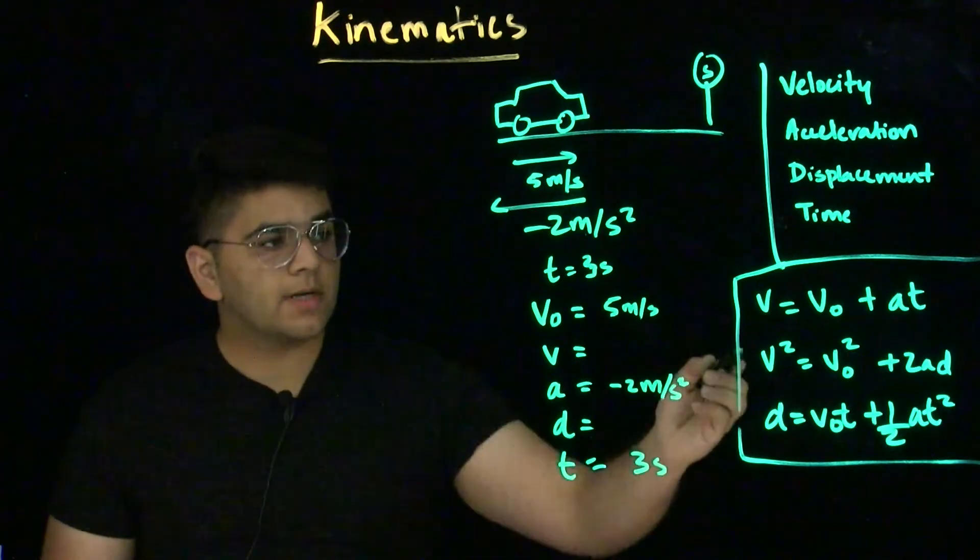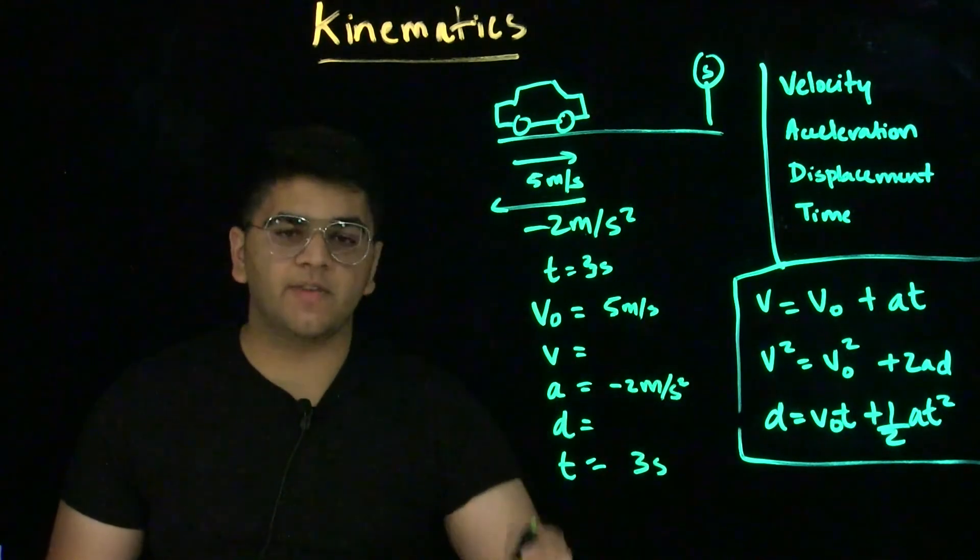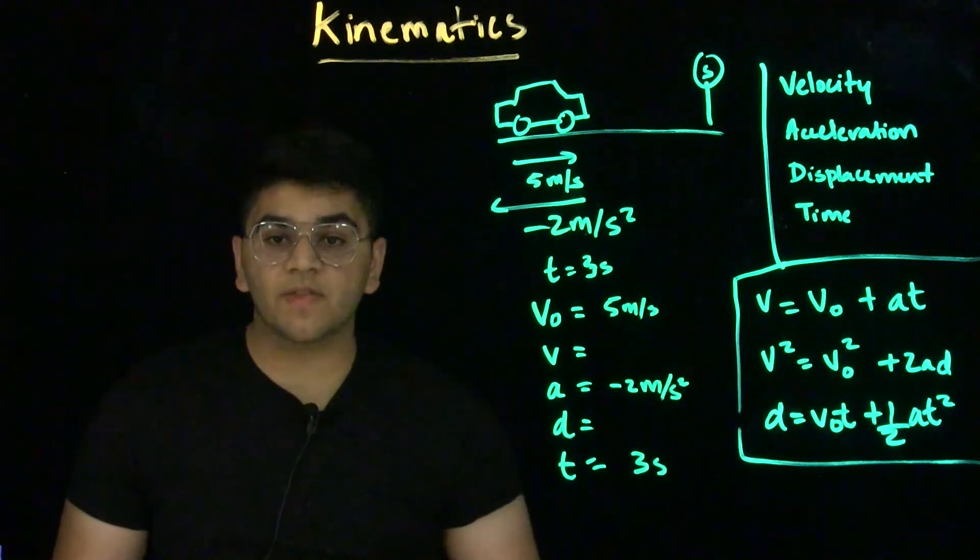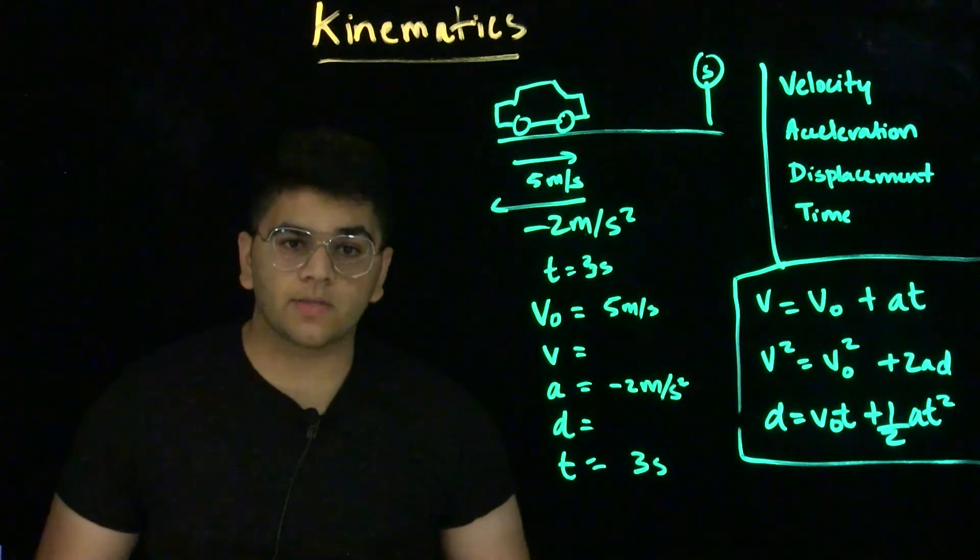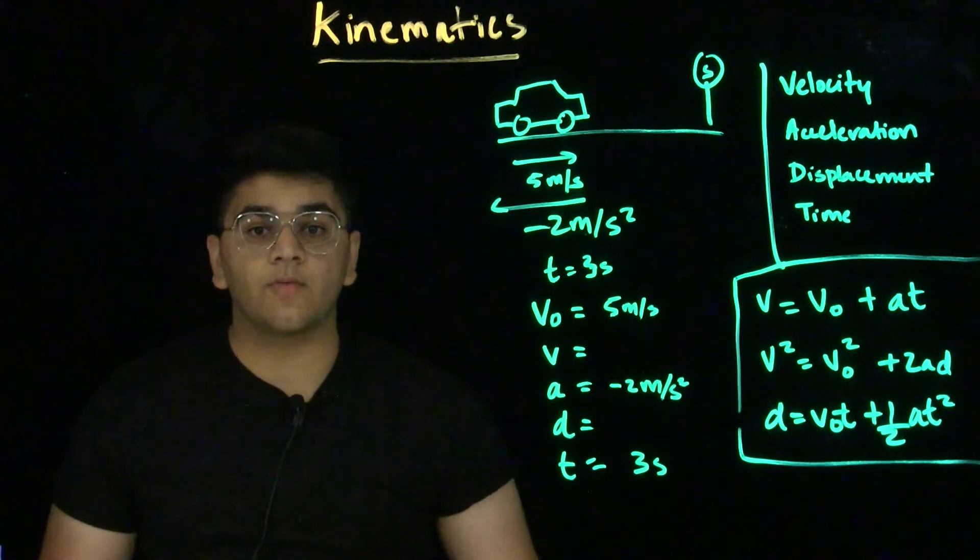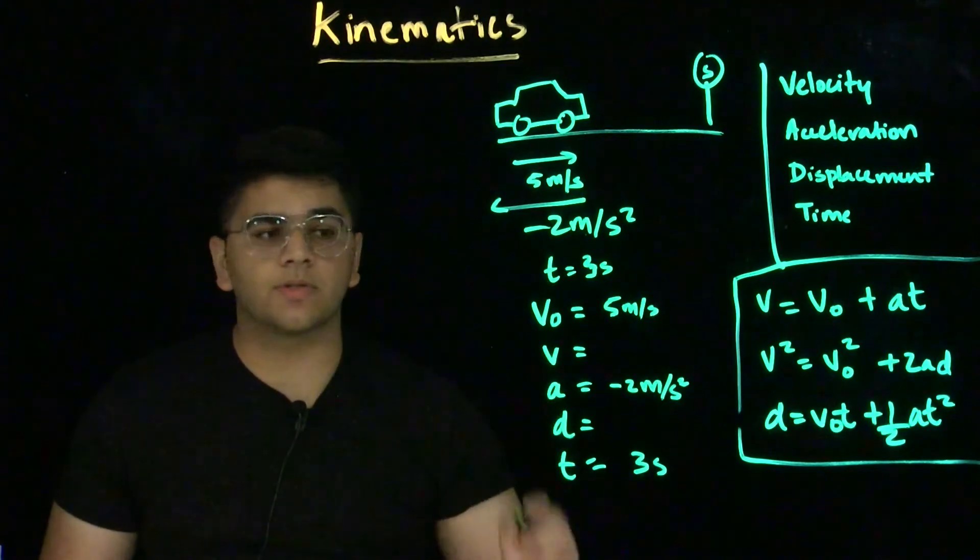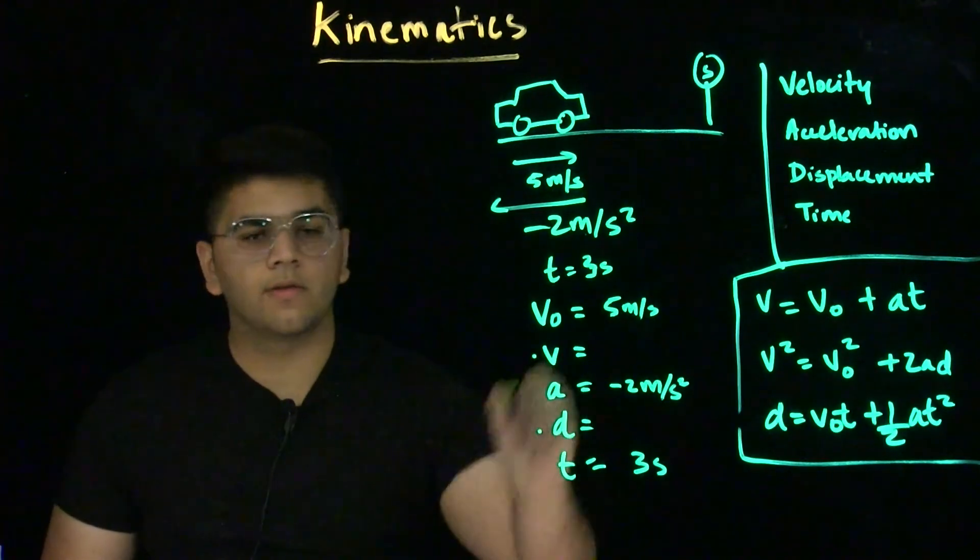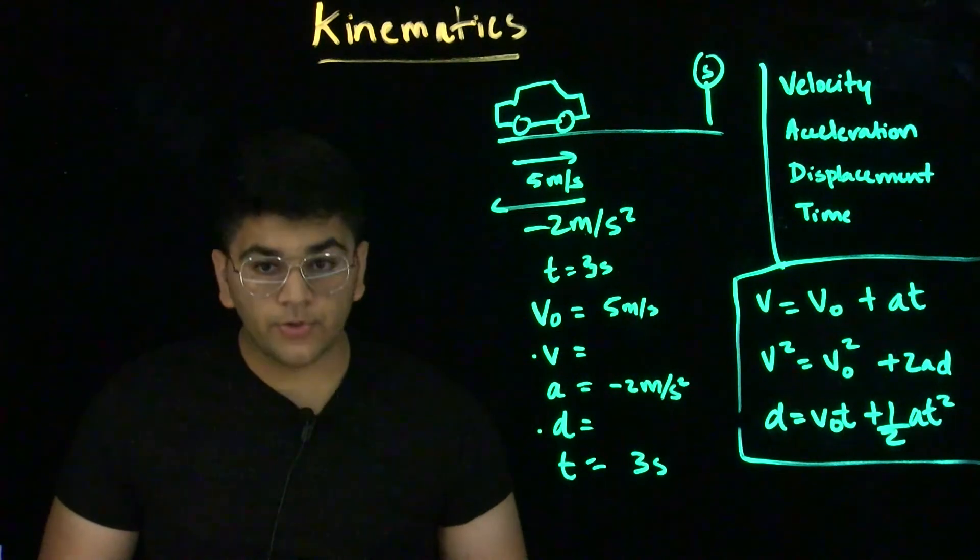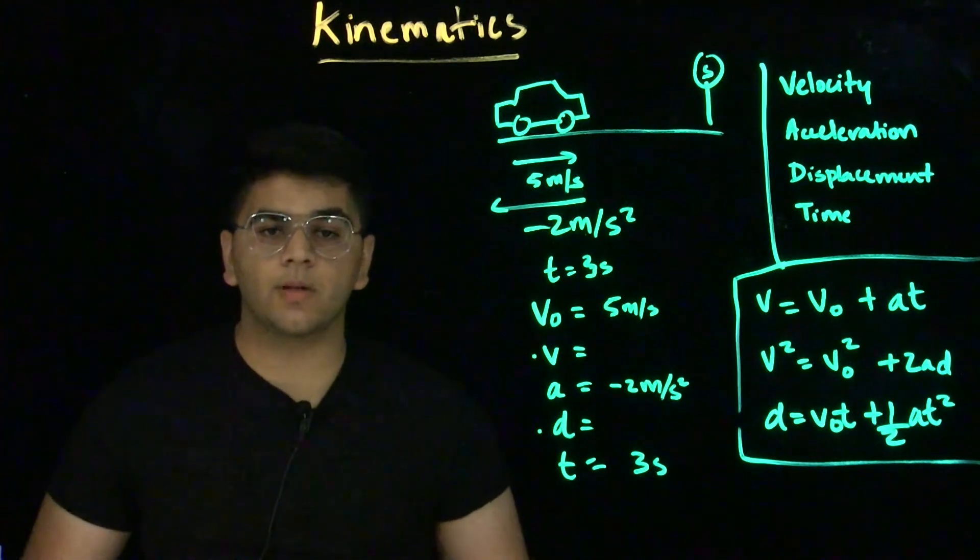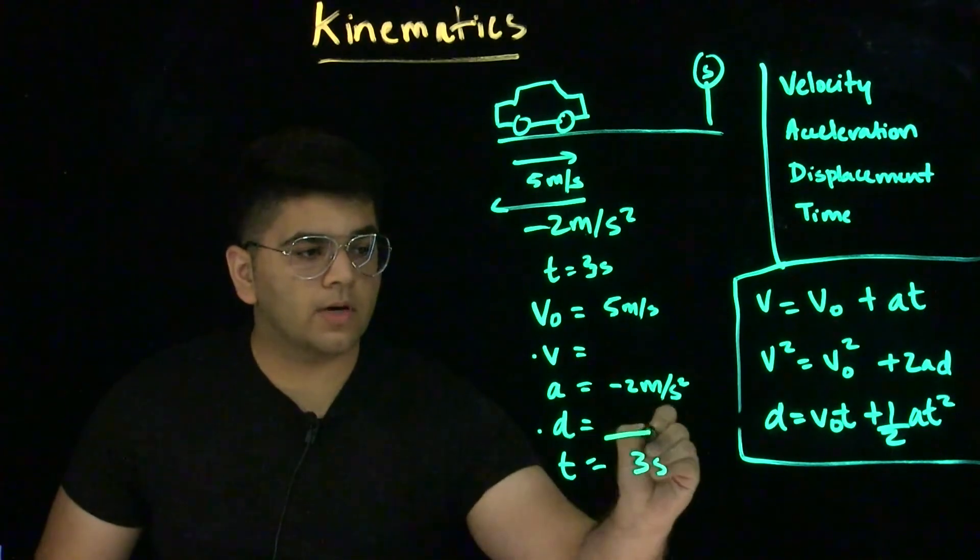If we study these equations closely, we'll see that of the 5 variables in each one, there's one of them missing. And they've been designed in this way. So, if we know any 3 of these variables, we can solve for the final 2, which is a rule you should remember whenever you're considering these problems. Let's look at what we're looking for. We're looking for displacement.